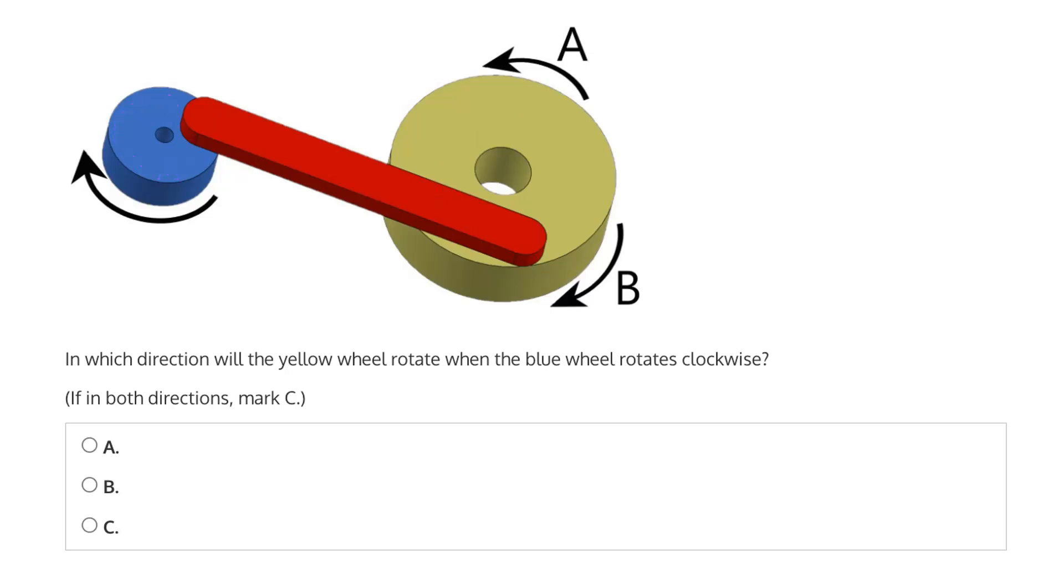So in which direction will the yellow wheel rotate when the blue wheel rotates clockwise? Initially, it will rotate counterclockwise, and then complete most of its rotation rotating clockwise. Therefore, the answer is C, in both directions.